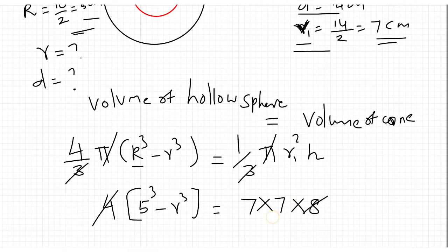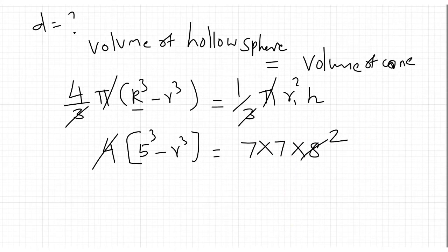Substituting h equals 8 and simplifying: 5 cube is 125 minus r cube equals 7 times 7, 49, times 2.